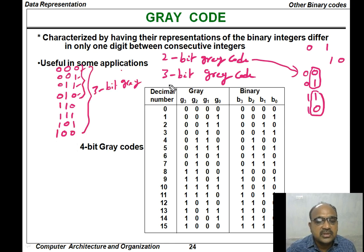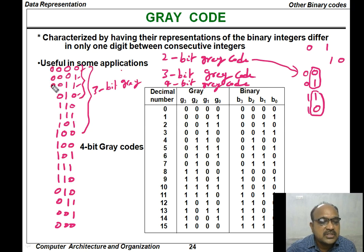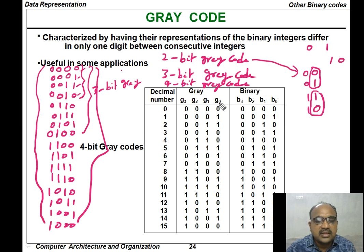This gives us the 3-bit Gray code. From the 3-bit Gray code we can generate the 4-bit Gray code using the same principle: take the reverse order of the 3-bit Gray code, embed 0s for the original and 1s for the reversed entries to get the 4-bit Gray code. The same formula applies for 5-bit, 6-bit, or any n-bit Gray code. The generated Gray code matches the standard Gray code table.